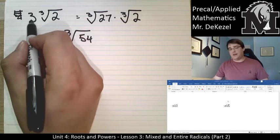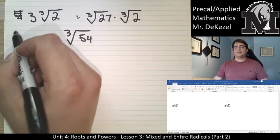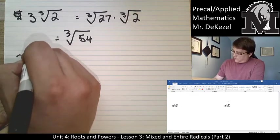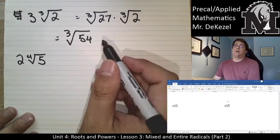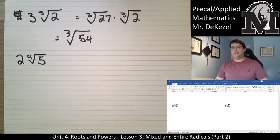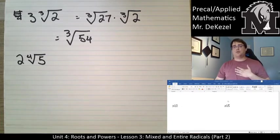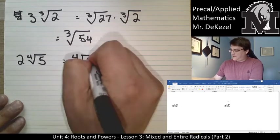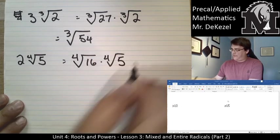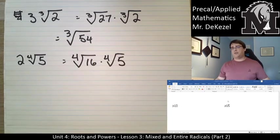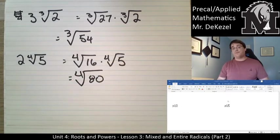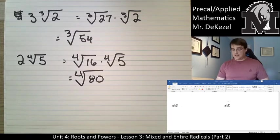Or essentially, take this value and use the index as its exponent to find out what number it needs to be. Let's do 2 fourth roots of 5. So what number do I need to fourth root to get 2? Well, I take 2 and I multiply by itself 4 times. 2 times 2 is 4, times 2 is 8, times 2 is 16. So that means that I have the fourth root of 16 multiplied by the fourth root of 5. We did this a little bit earlier. We broke this down. It was 80. The fourth root of 80 is our final answer. So it is as easy as that.